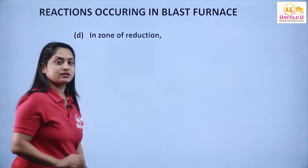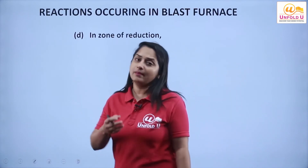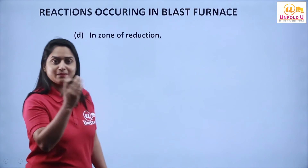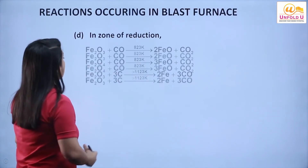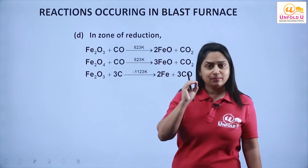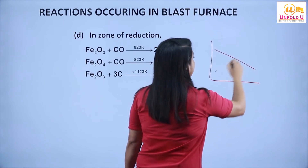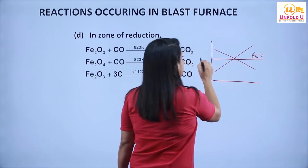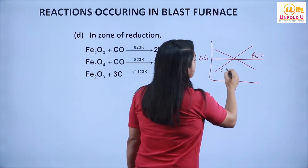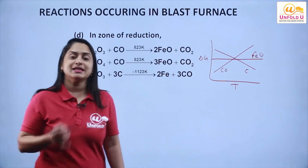The zone of reduction: we have taken the ore already in oxide form, and we add a reducing agent to obtain the metal. For the reduction, as discussed in the Ellingham diagram, looking at the ΔG vs T plots, along with the iron oxide line, carbon monoxide acts as a better reducing agent at low temperature, while carbon acts as a better reducing agent at higher temperature.